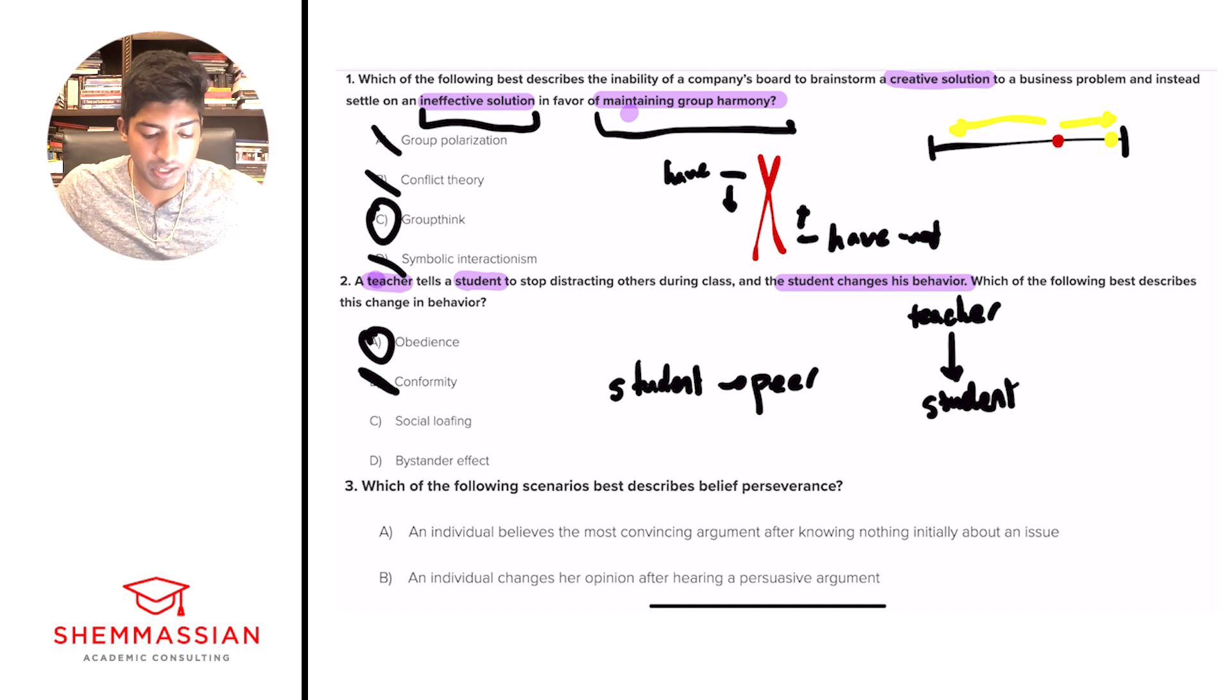So we can eliminate B. Social loafing is not really a relevant term here—it's the example of when you're working in a group, you're not putting out your best work. You're putting out less than optimal work because you're in a large group. Social loafing doesn't really make sense here. And the bystander effect is when you're not willing to do something when you're in a large group of people because you think someone else will do it. The classic example is when you see something happen on the street, like a stabbing—you're not willing to react to it immediately because you think others will. That's the bystander effect. It doesn't really relate here. Remember, these terms will come up over and over again, so make sure you understand them.